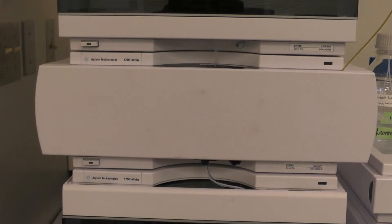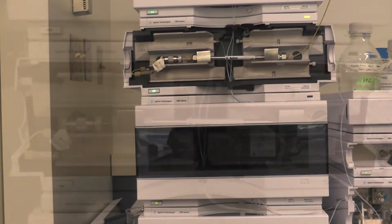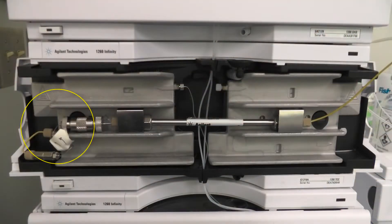The column compartment is where the column which contains the stationary phase is placed and where the sample is eluted from the column. The left-hand end is connected to the auto sampler and the right-hand end is connected to the detector. The temperature of both ends can be controlled and monitored.